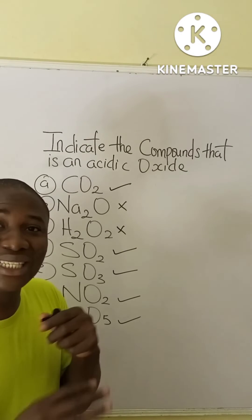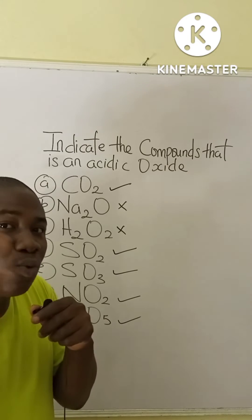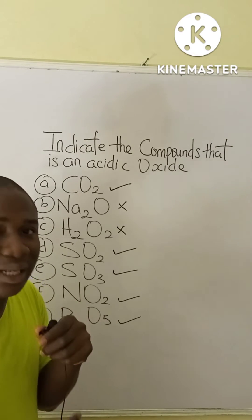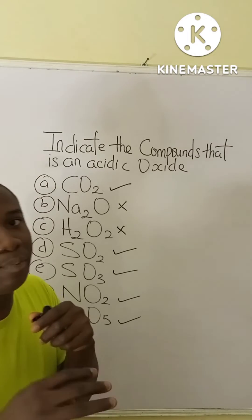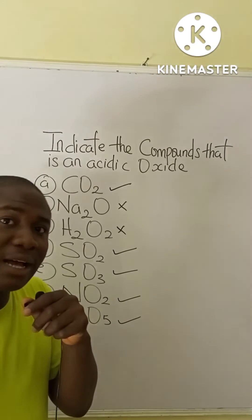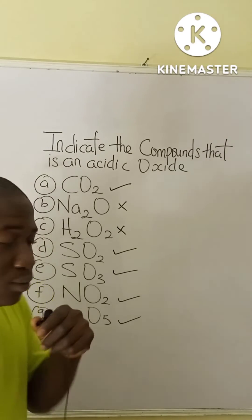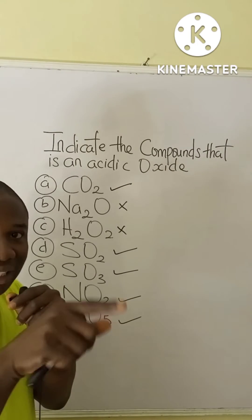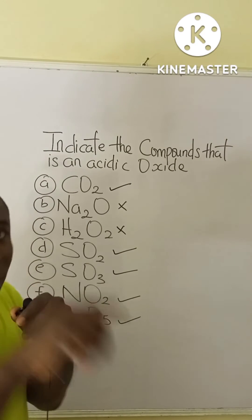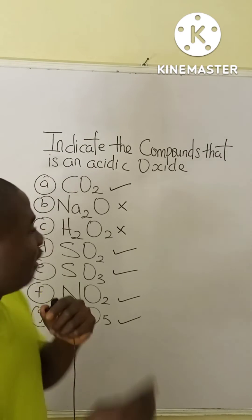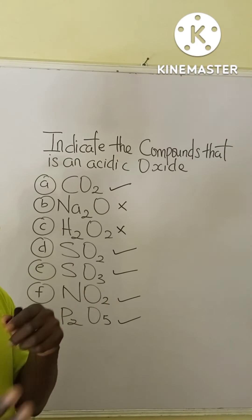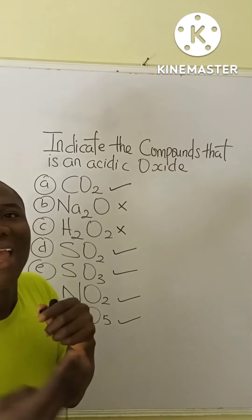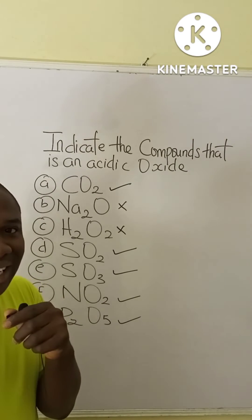For option B, Na₂O is not an acidic oxide — it is a basic oxide. Basic oxides are oxides formed from metals. Sodium is the metal that combines with oxygen, which is why this compound is called a basic oxide.